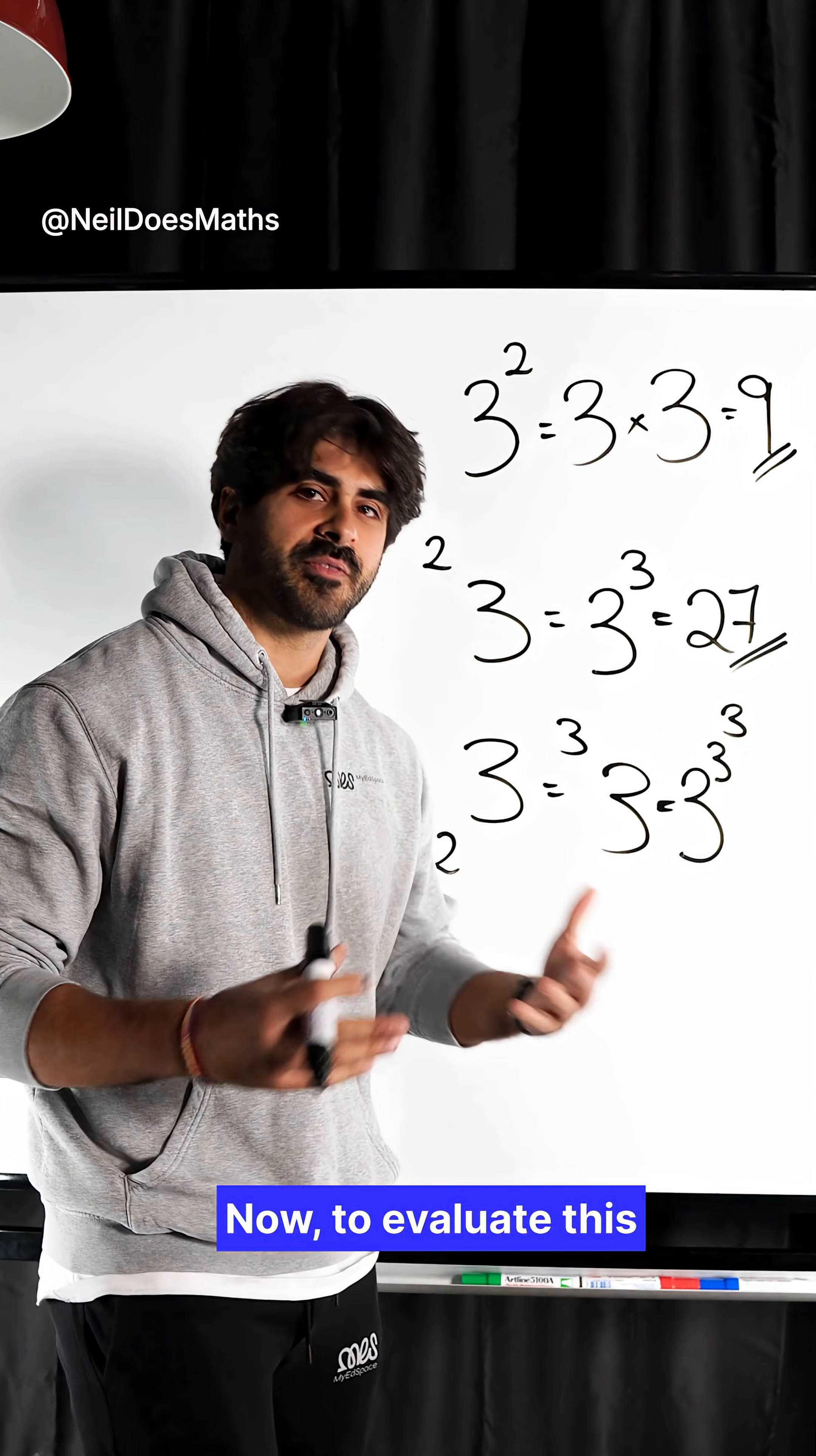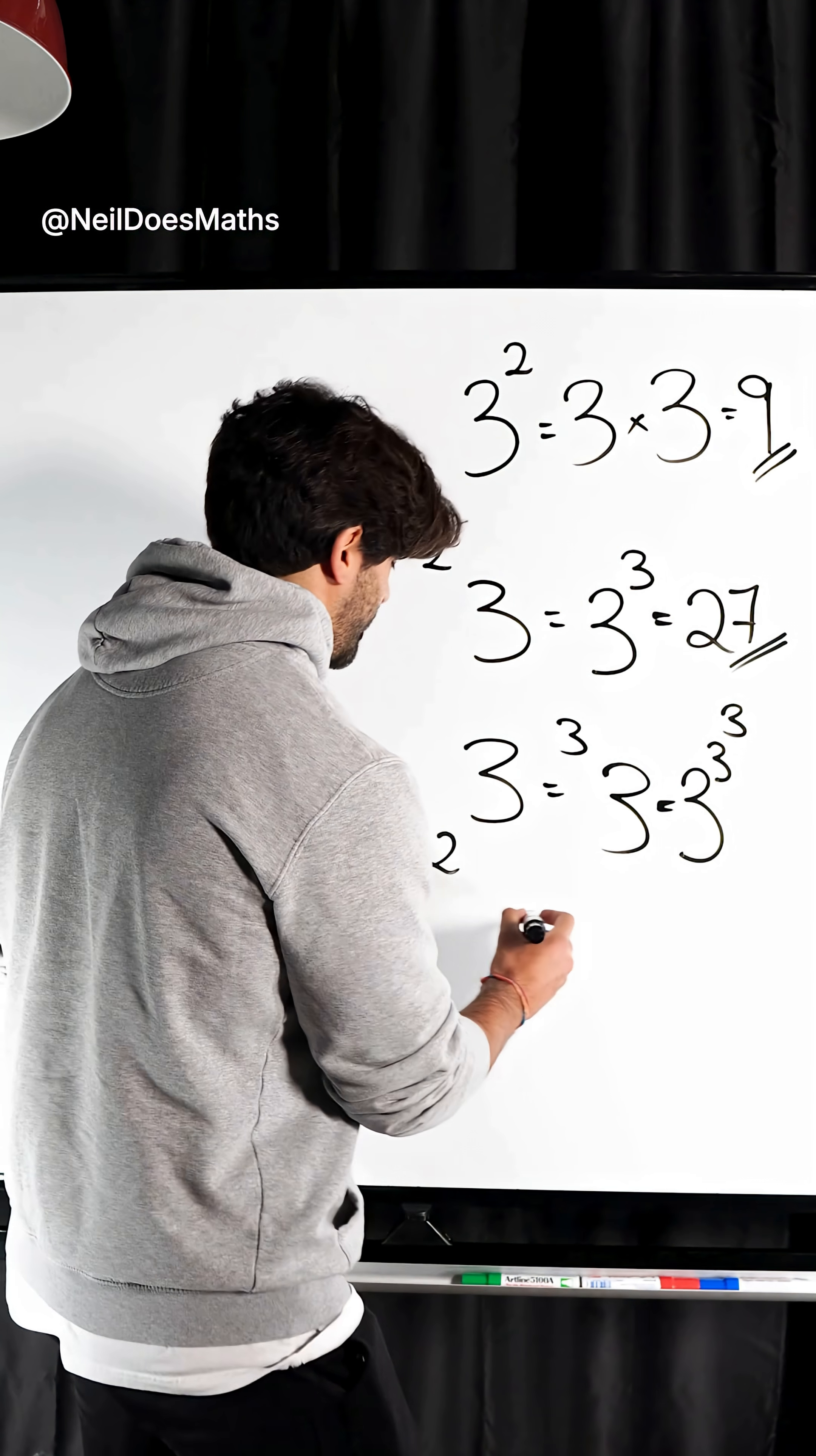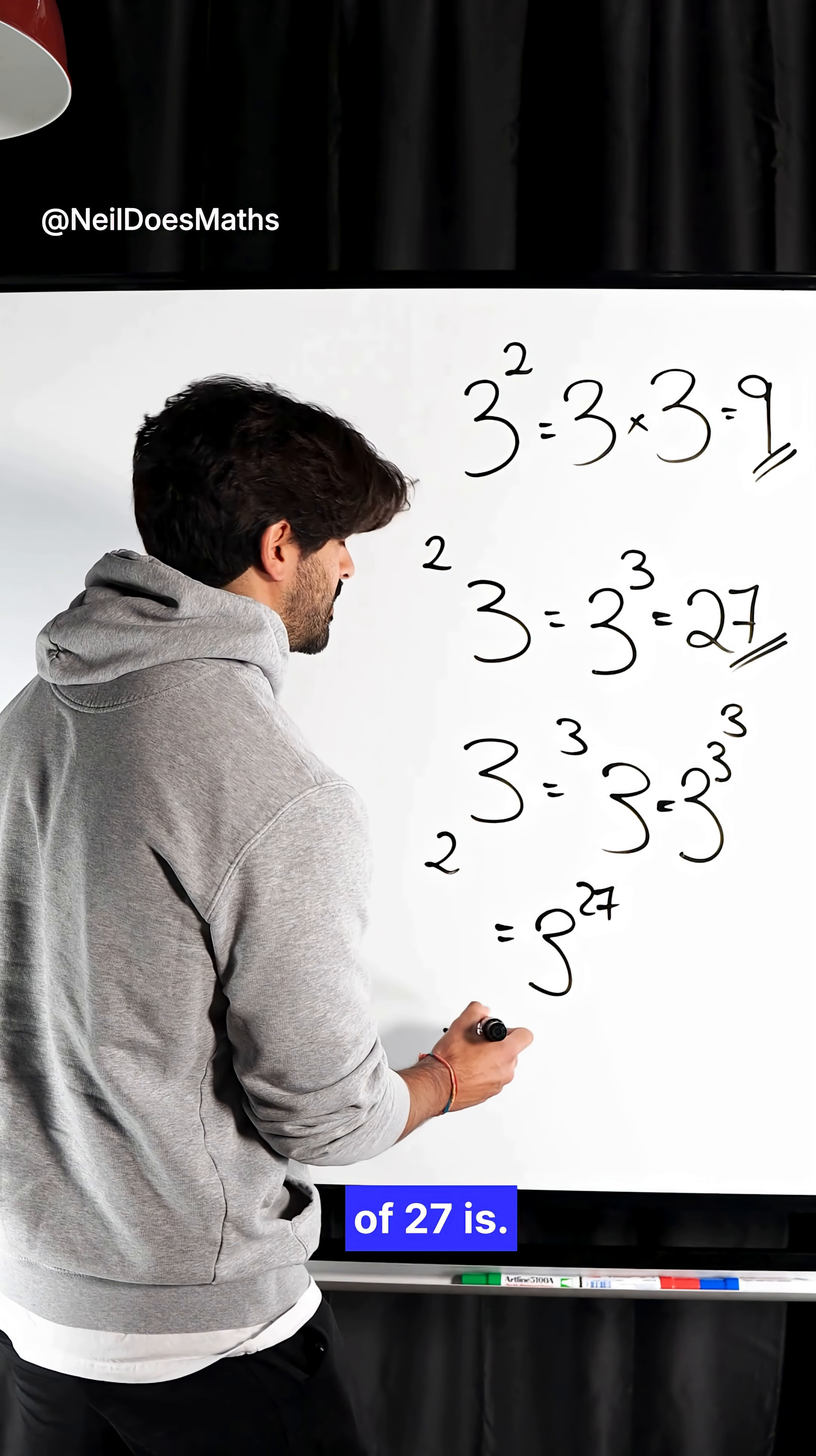Let's evaluate it. Now to evaluate this pentation, I have three to the power of three to the power of three. Three to the power of three, we know already is 27. So this is three to the power of 27, which I've done this many times now. I know exactly what three to the power of 27 is.